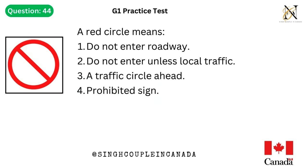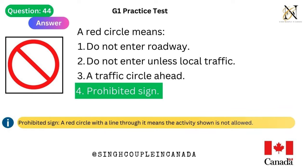Question 44. A red circle means: 1. Do not enter roadway. 2. Do not enter unless local traffic. 3. A traffic circle ahead. 4. Prohibited sign. Answer is 4. Prohibited sign. A red circle with a line through it means the activity shown is not allowed.